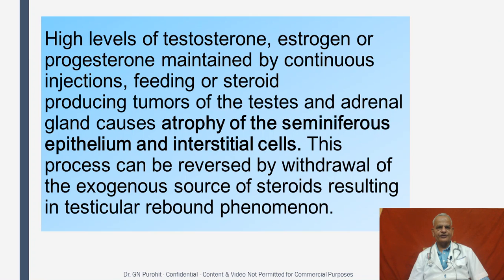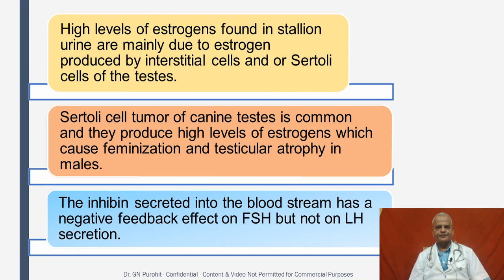High levels of testosterone, estrogen, or progesterone maintained by continuous injections, feeding, or steroid-producing tumors of the testes and adrenal gland cause atrophy of the seminiferous epithelium and interstitial cells. This process can be reversed by withdrawal of the exogenous source of steroids, resulting in the testicular rebound phenomenon. Exogenous administration of high doses of testosterone, estrogen, or progesterone is therefore contraindicated for breeding bulls. High levels of estrogen found in stallion urine are mainly due to estrogen produced by interstitial cells and/or Sertoli cells. Sertoli cell tumor of the canine testes is common and produces high levels of estrogen, causing feminization and testicular atrophy in males.